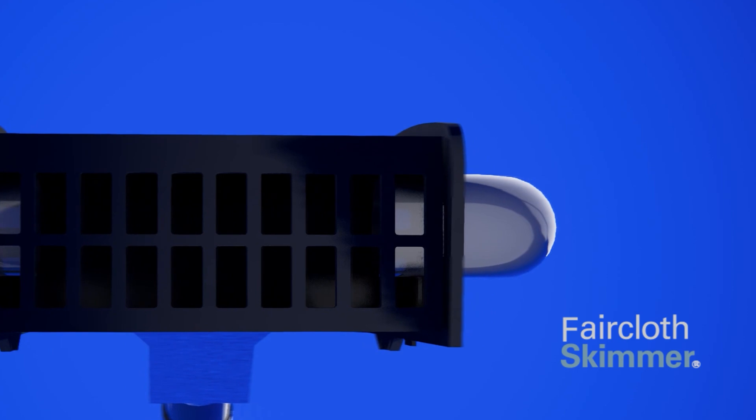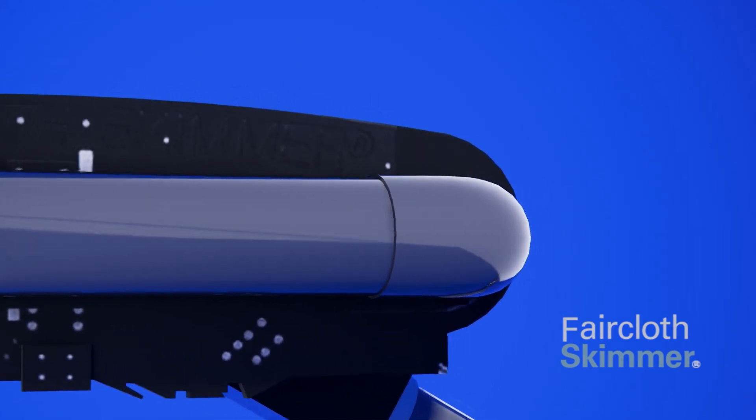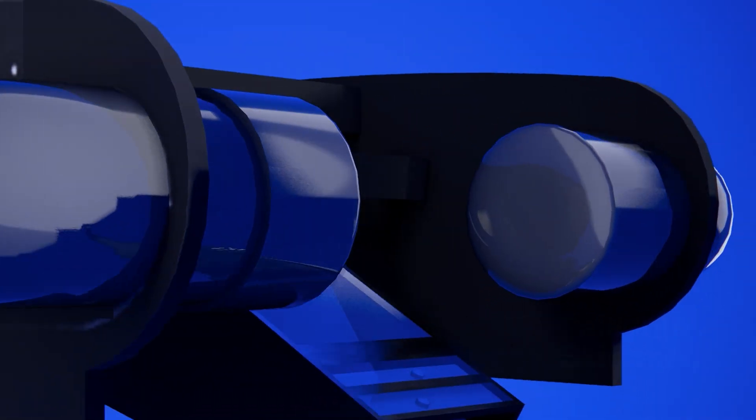The Faircloth Stormwater Skimmer is a permanent floating surface drain manufactured by J.W. Faircloth, creator of the original Sediment Basin Skimmer.